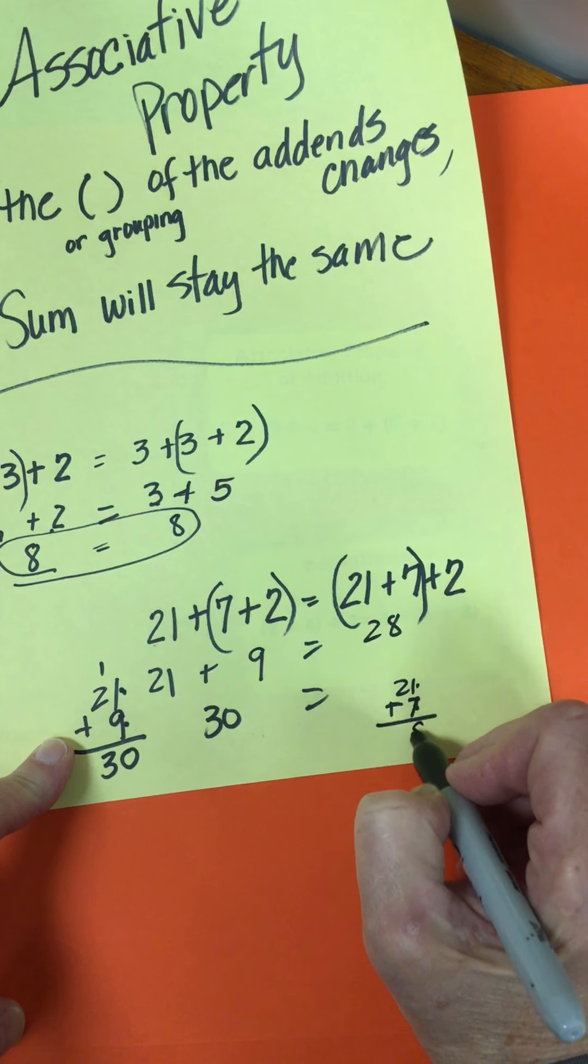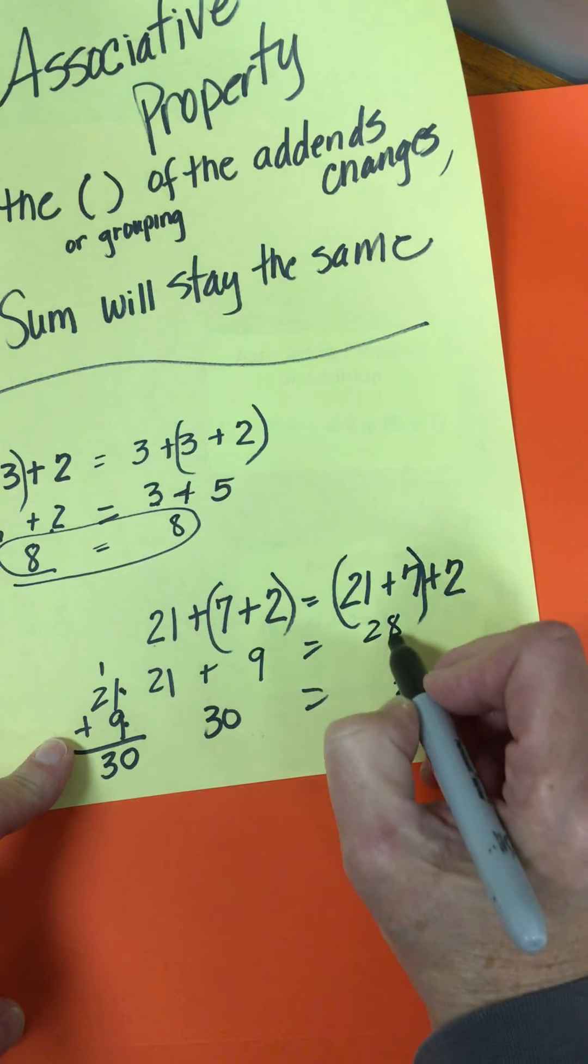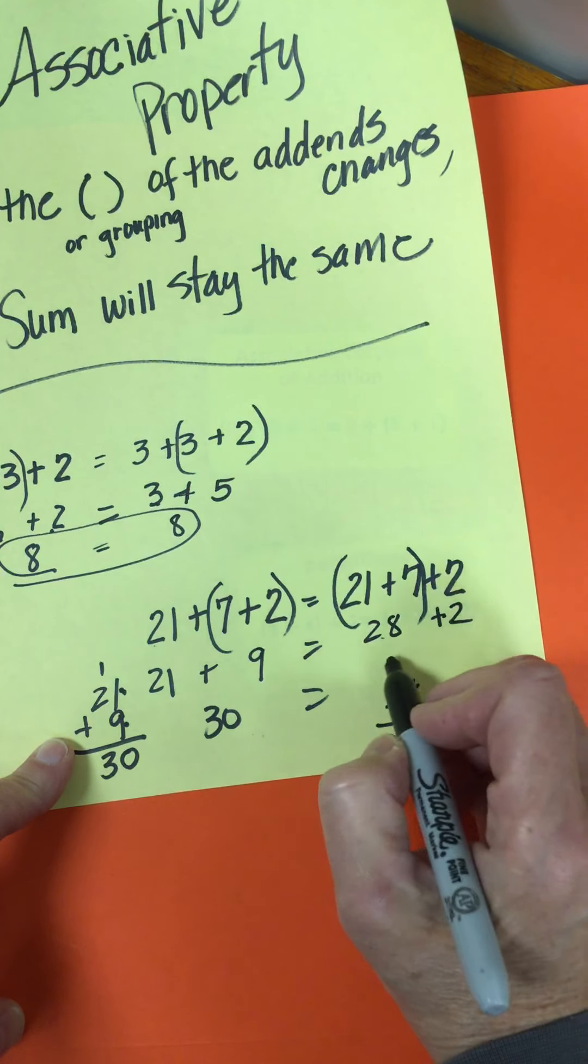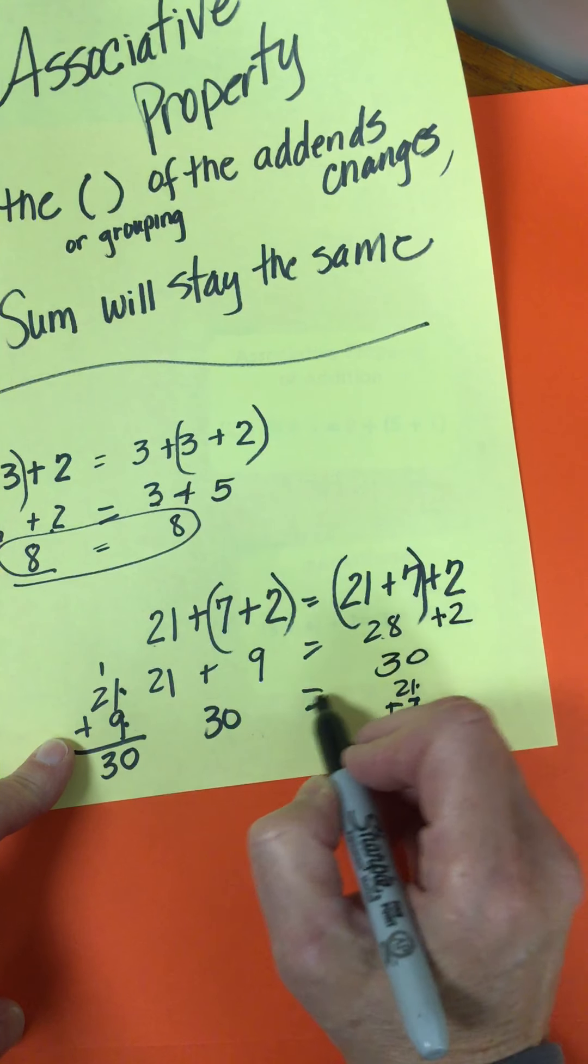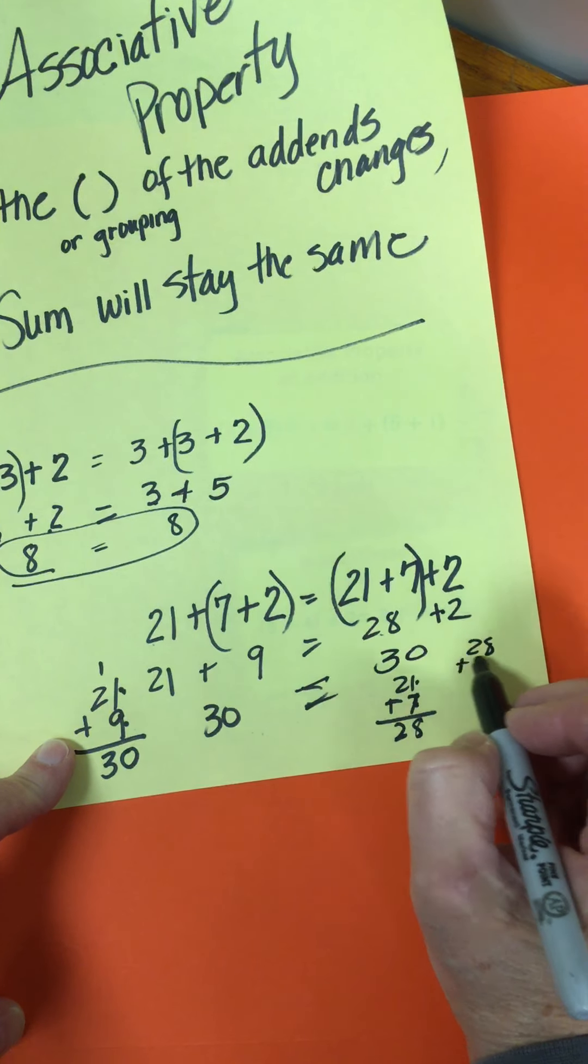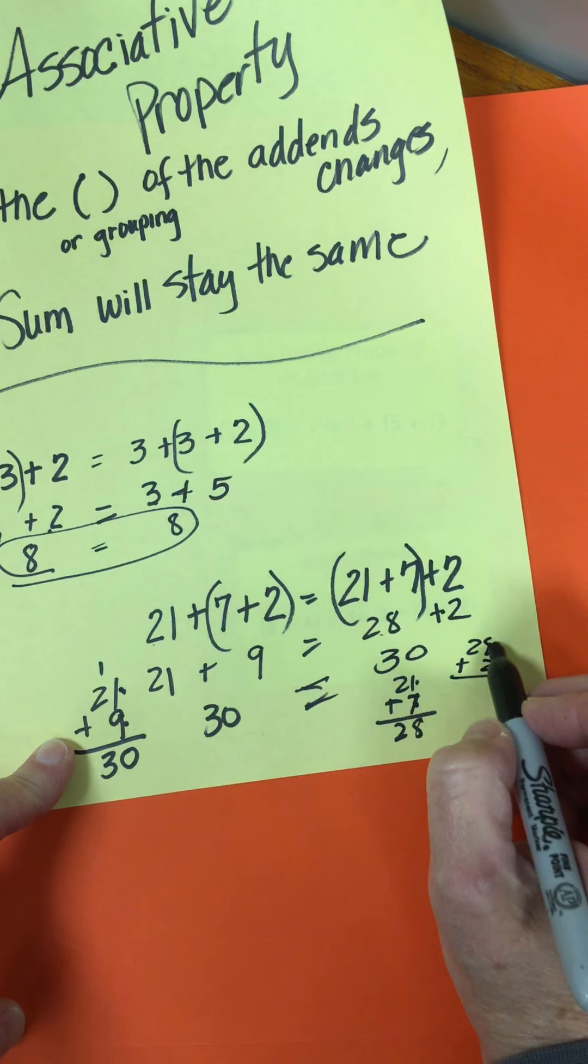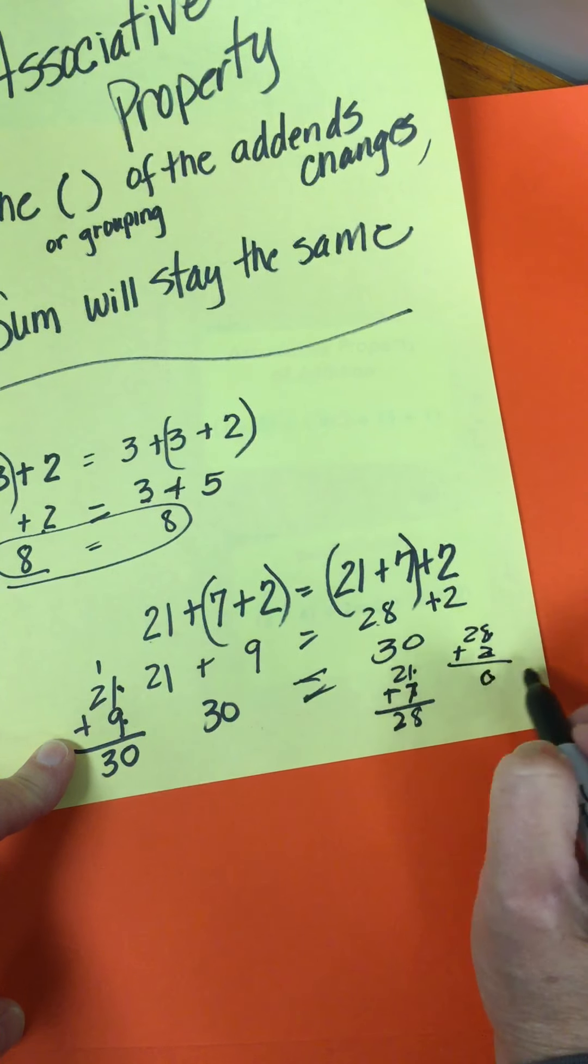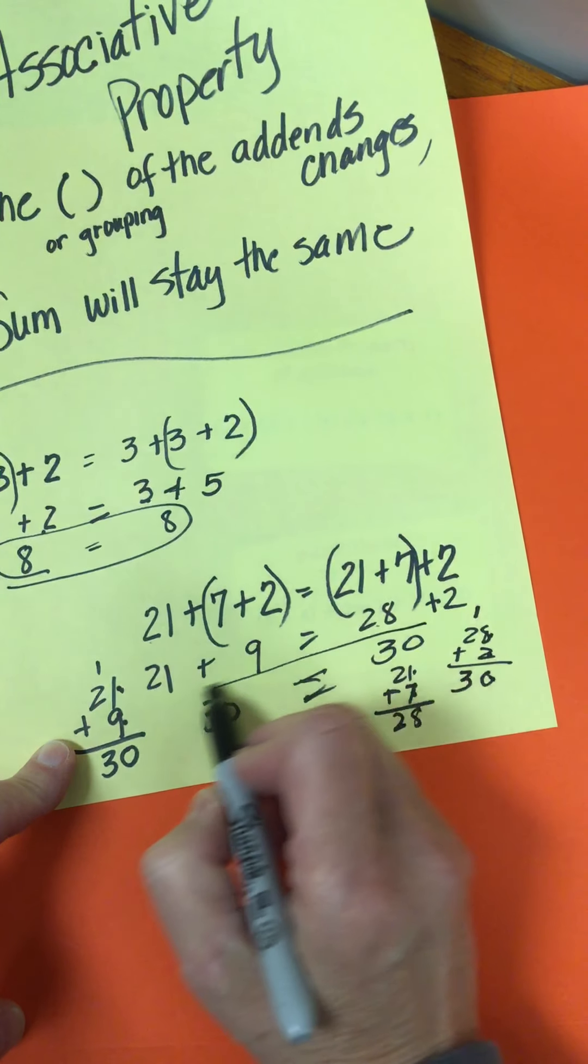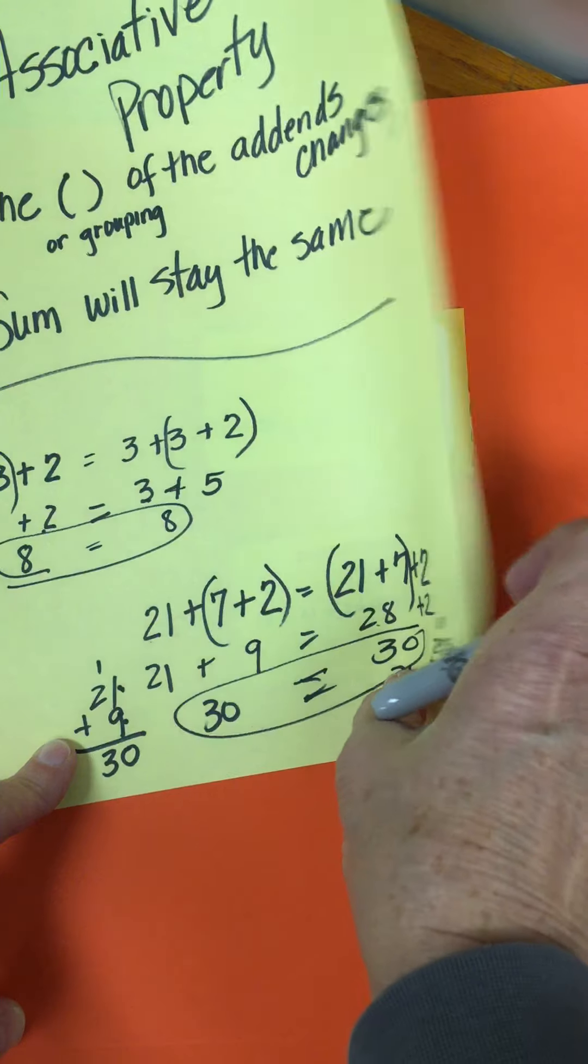Okay, so 30 plus 30. And again, if you need to line them up, that's okay. 2 plus 8 is 10. Whoops, my marker's not working. And carry the 1, 30. Okay, so that's called balancing them.